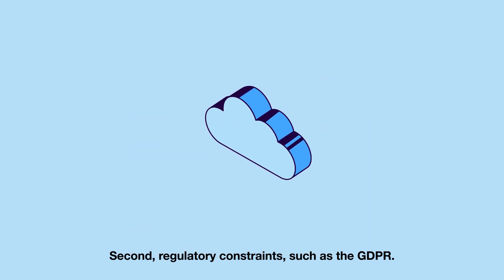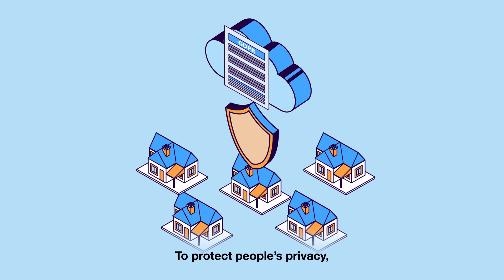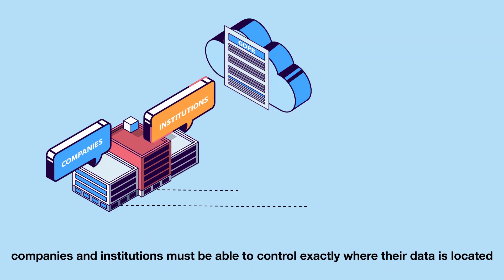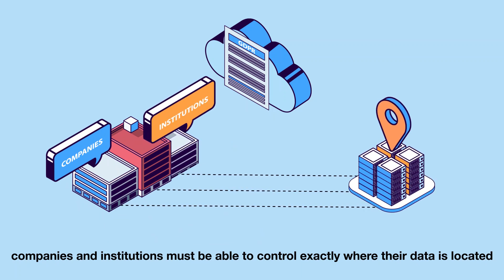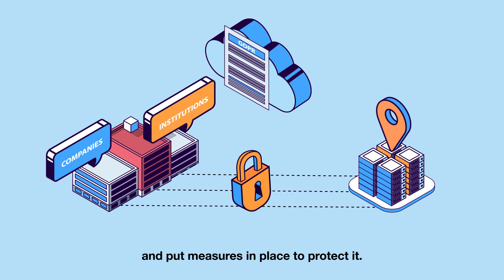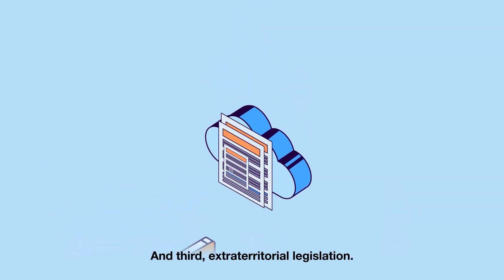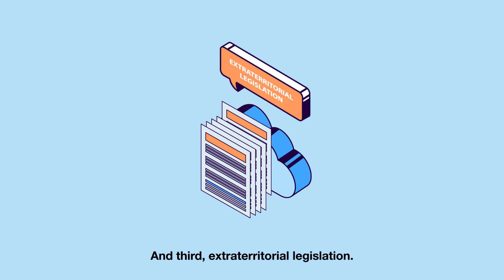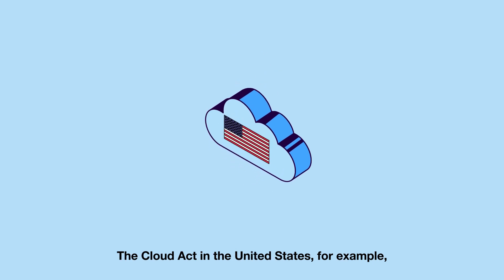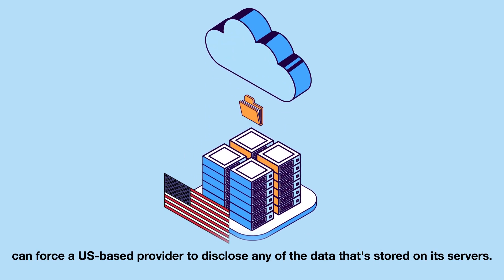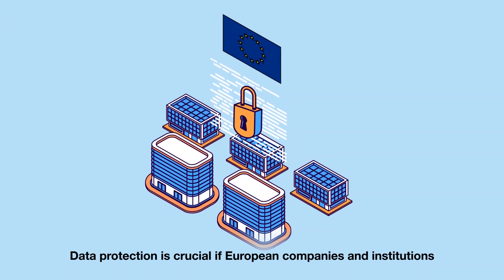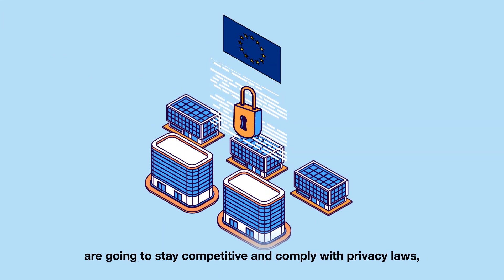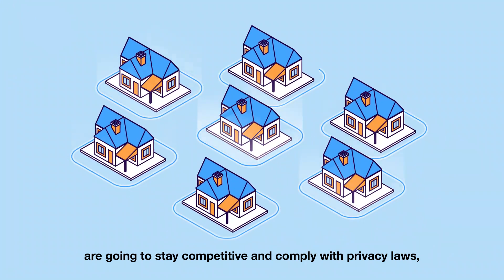Second, regulatory constraints, such as the GDPR. To protect people's privacy, companies and institutions must be able to control exactly where their data is located and put measures in place to protect it. And third, extraterritorial legislation. The Cloud Act in the United States, for example, can force a US-based provider to disclose any of the data that's stored on its servers. Data protection is crucial if European companies and institutions are going to stay competitive and comply with privacy laws.